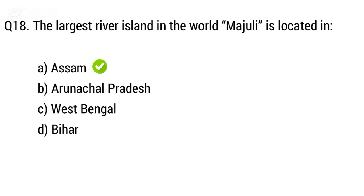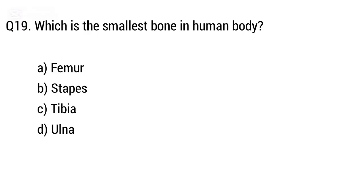Question 19: Which is the smallest bone in the human body? Options: A. Femur, B. Stapes, C. Tibia, D. Ulna. The right answer is option B: Stapes.